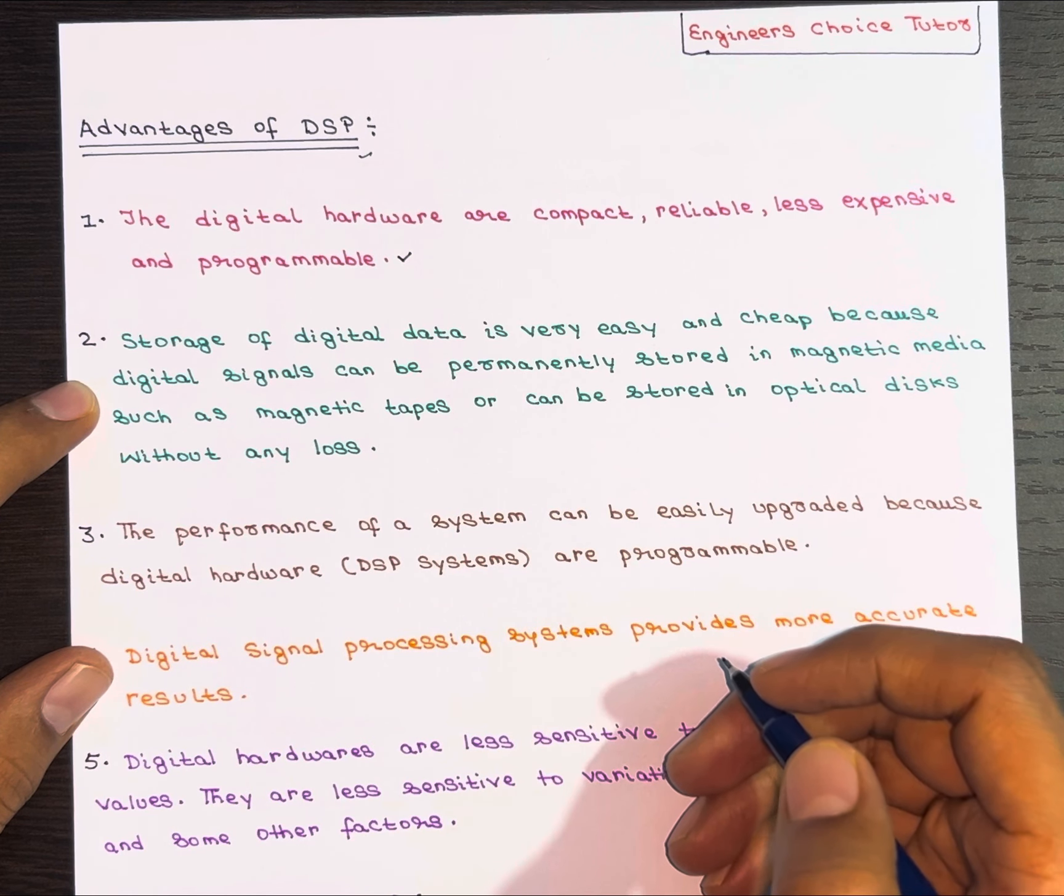Now let's come to the second advantage. Storing digital data is very easy and cheap because digital signals can be permanently stored on magnetic media such as magnetic tapes or can be stored in optical discs without any loss.